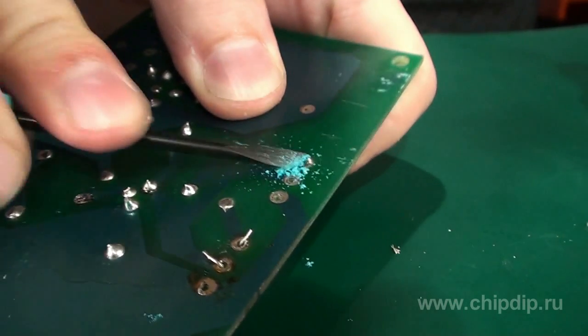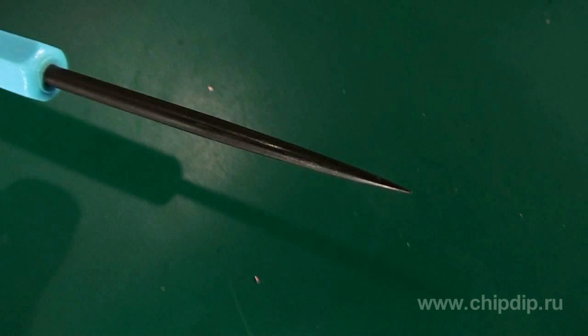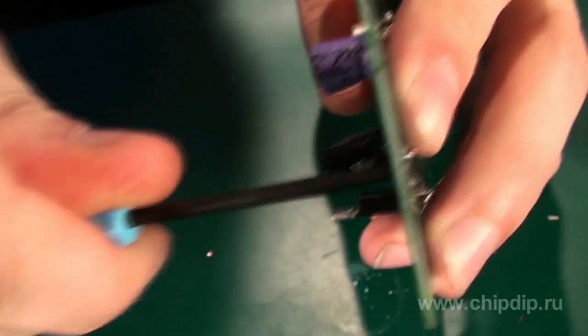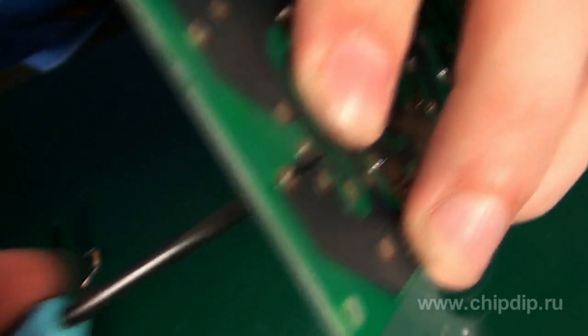The reamer is cylindrical at one end and four-sided at the other. It is used for cleaning and expanding holes in the boards.